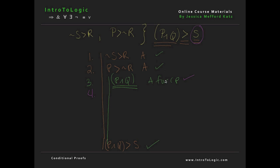So we now have three assumptions, because we've assumed for CP. We've drawn our scope line, and we're going to write the consequent of the conditional we're trying to prove, which is S. And so we have P and Q, and given our AND elimination rules, we can split those up. We have P on line 4, and Q on line 5 from 3 and E.